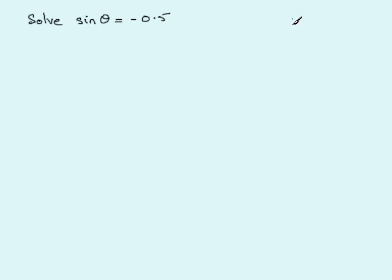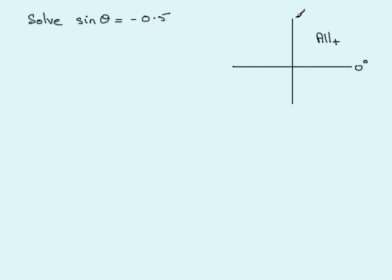In an earlier tutorial I discussed how the trig ratios varied their sign. Between 0° and 90° the sine, cos, or tan of any angle are all positive. Between 90° and 180° only sine is positive. Between 180° and 270° only tangent is positive. And from 270° to 360° only cosine is positive.